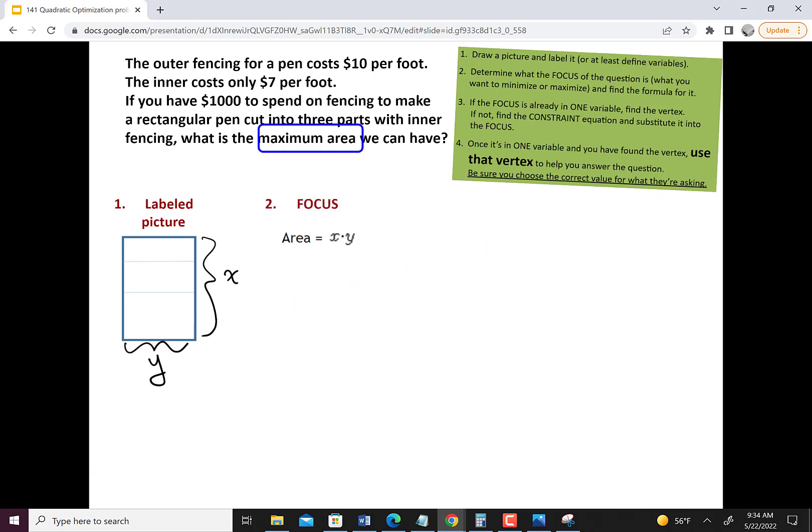Now the focus is what do we want to minimize or maximize, and it's really important to start there. Don't worry about all this money up here. The question is about maximizing the area, so let's find that formula, which is really simple. It's just x times y.